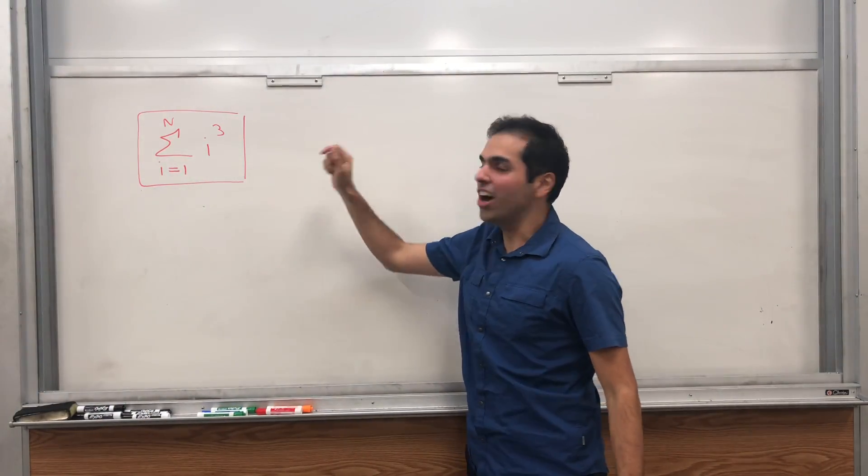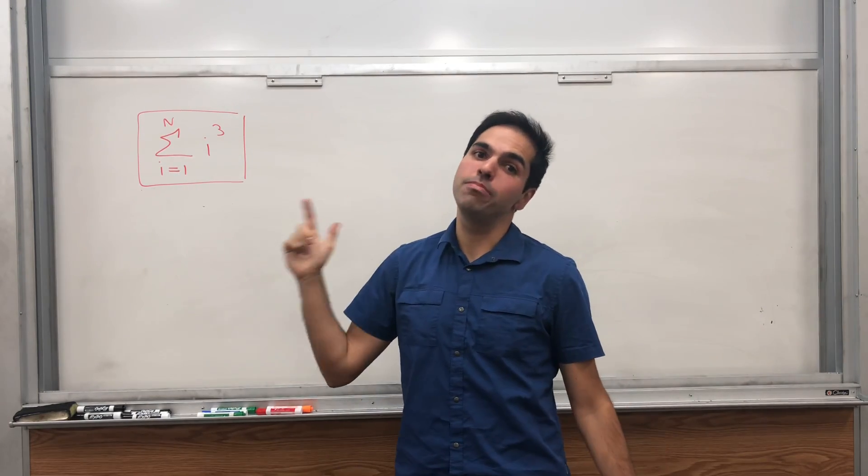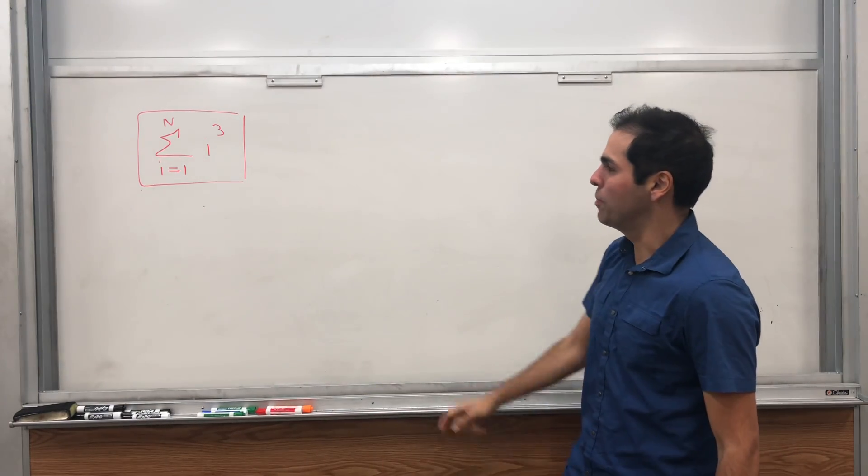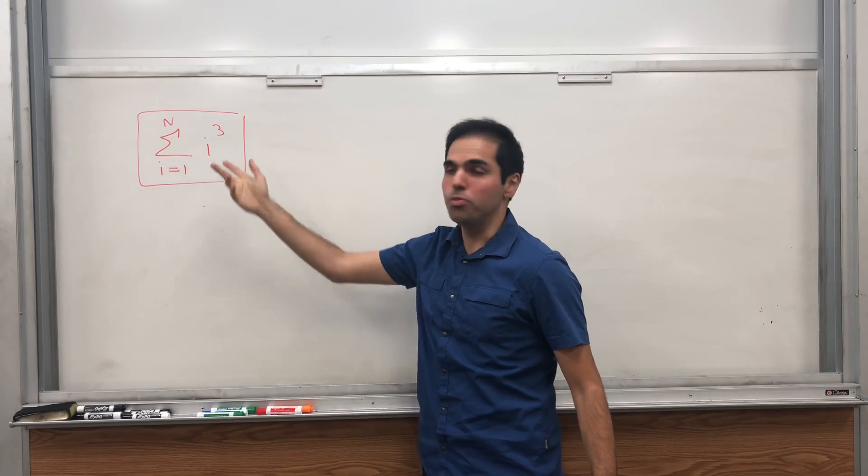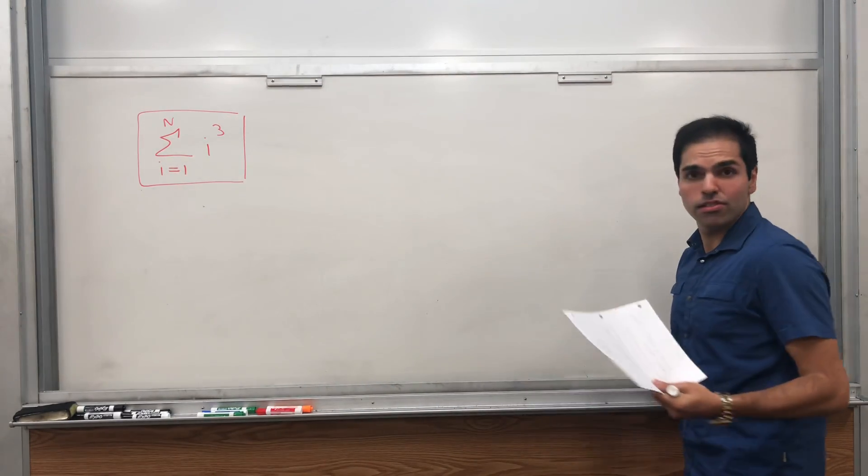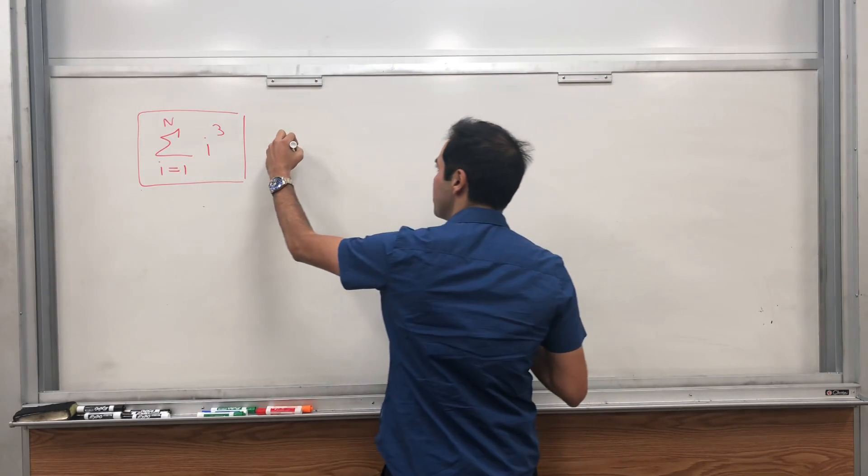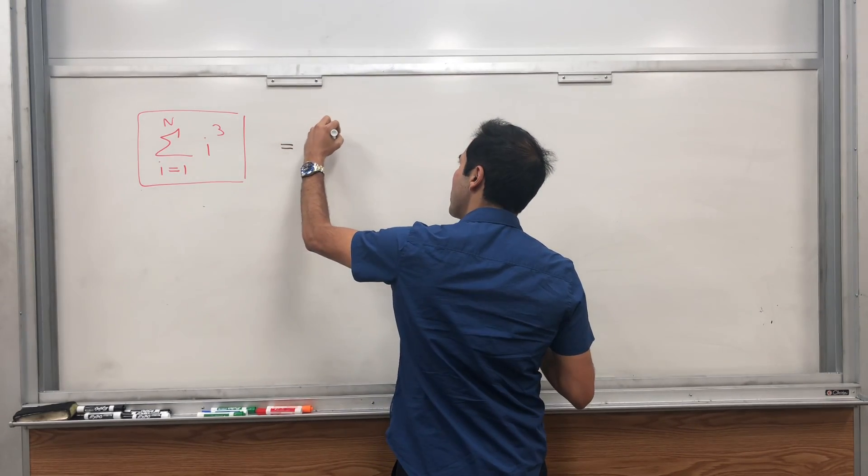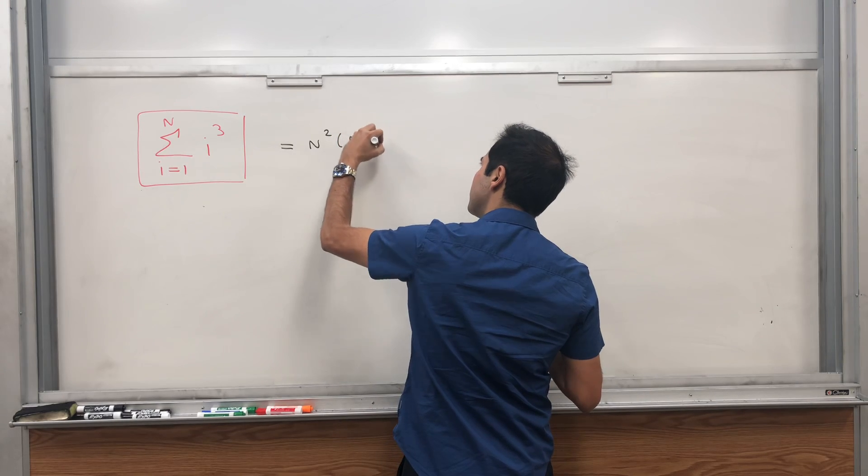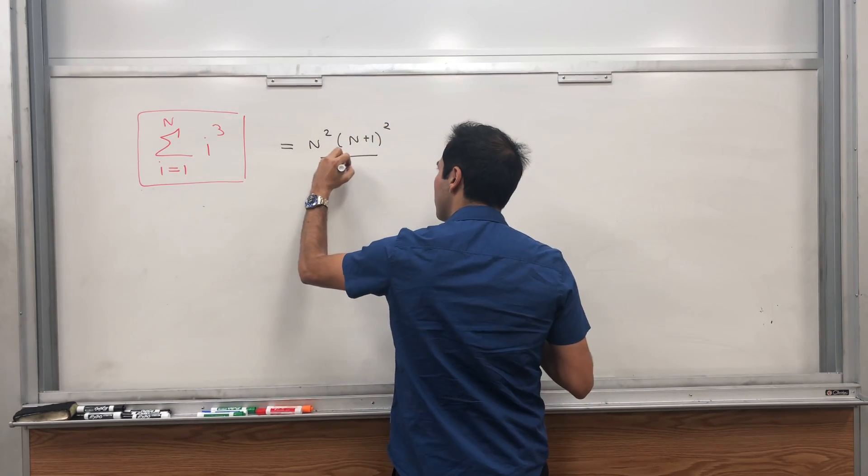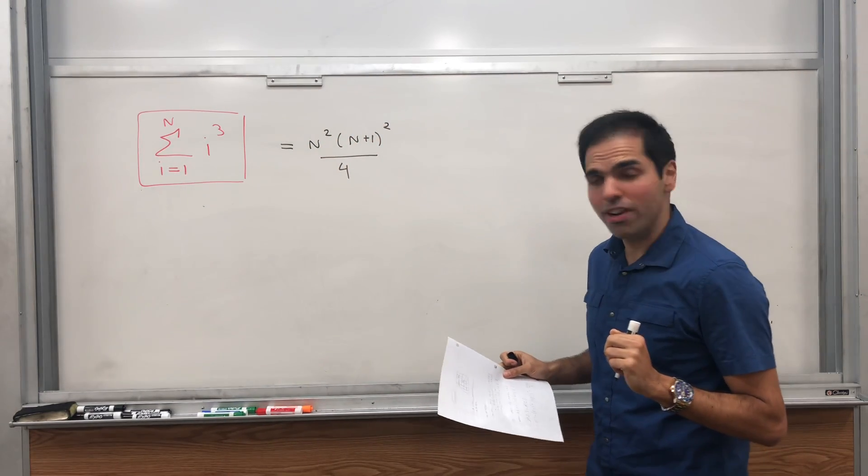Today I want to talk about an issue that's actually been bugging me for a very long time, namely the sum of cubes. If you don't know the formula, the formula for the sum of cubes is simply n squared times n plus 1 squared over 4, which you usually prove by induction.